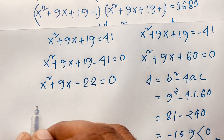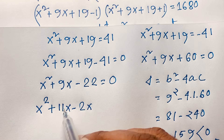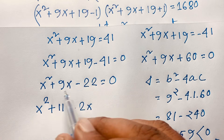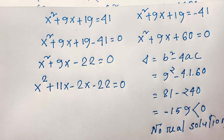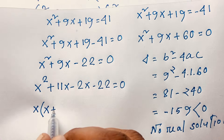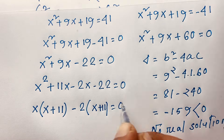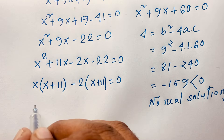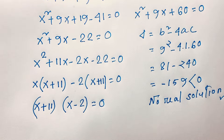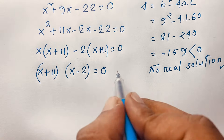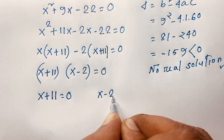We factor the quadratic x² + 9x − 22 = 0 by middle-term splitting: x² + 11x − 2x − 22 = 0, since 11 × 2 = 22 and 11 − 2 = 9. Taking x common: x(x + 11) − 2(x + 11) = 0, which gives (x + 11)(x − 2) = 0.